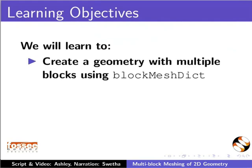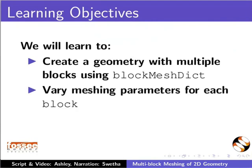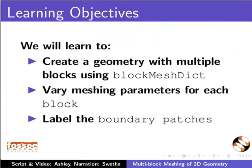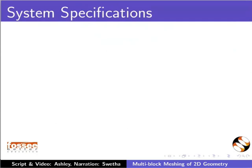create a geometry with multiple blocks using blockMeshDict, vary meshing parameters for each block, label the boundary patches, and view the mesh in Paraview. To record this tutorial, I am using